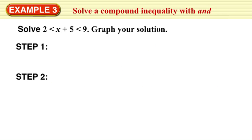Sorry if there's any confusion about where example 2 went — we're just jumping right to example 3. Example 2 was very similar to example 1, so we're jumping ahead to example 3: how to solve a compound inequality with 'and'.